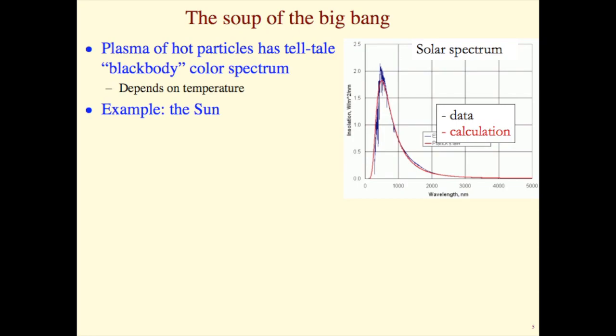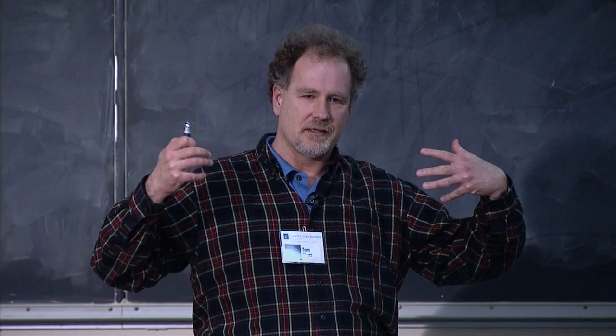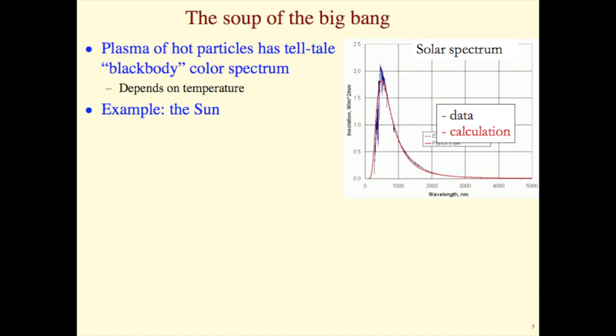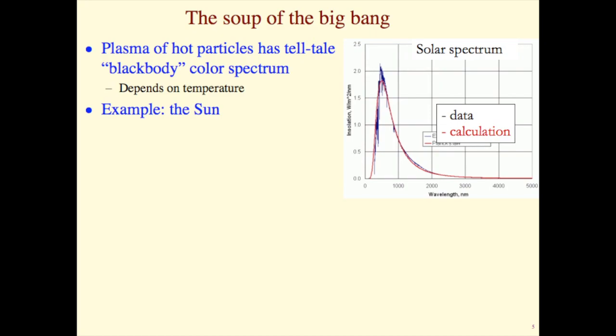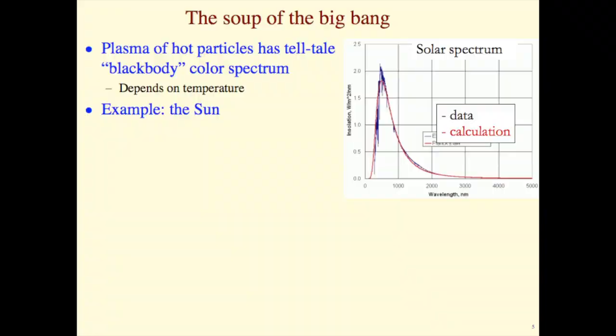The title is 'The Soup of the Big Bang.' The first direct evidence for the Big Bang is that galaxies are all moving away from us. If you rewind the clock, eventually everything must have been all crushed together, and if it was all crushed together, it was at some point some kind of plasma. We have a very good description of hot plasmas — it's glowing, like the center of a flame, and it should have a very characteristic color spectrum that depends on temperature. An example of that is the sun. This thing is called a blackbody spectrum.